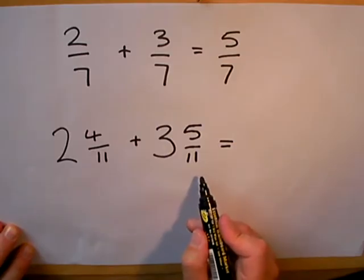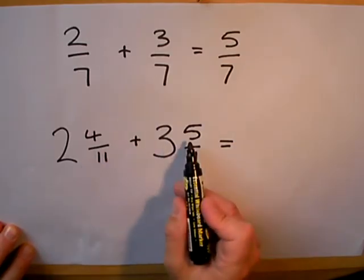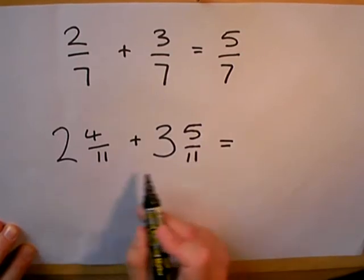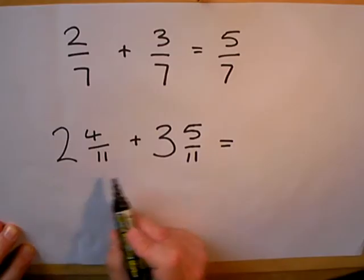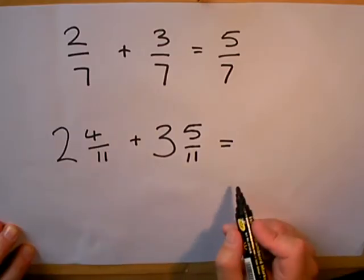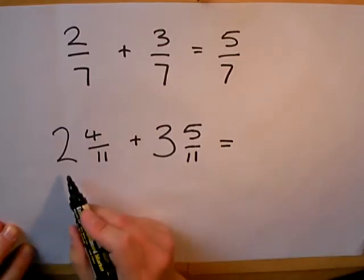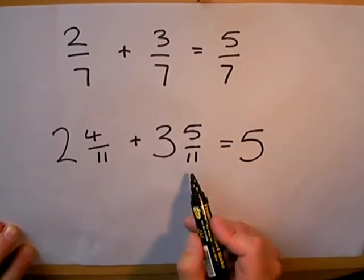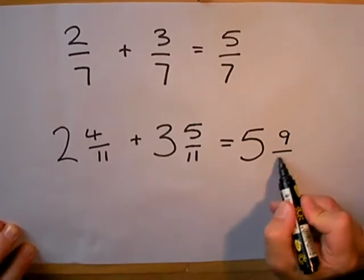We just add together the top numbers. We also have some whole numbers here, two whole ones and three whole ones, so again we can add those together. Two whole ones and three whole ones: five whole ones. And four elevenths and five elevenths are nine elevenths.